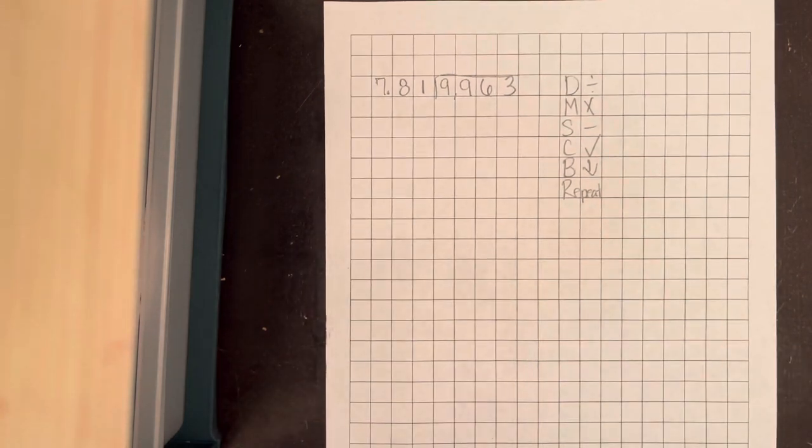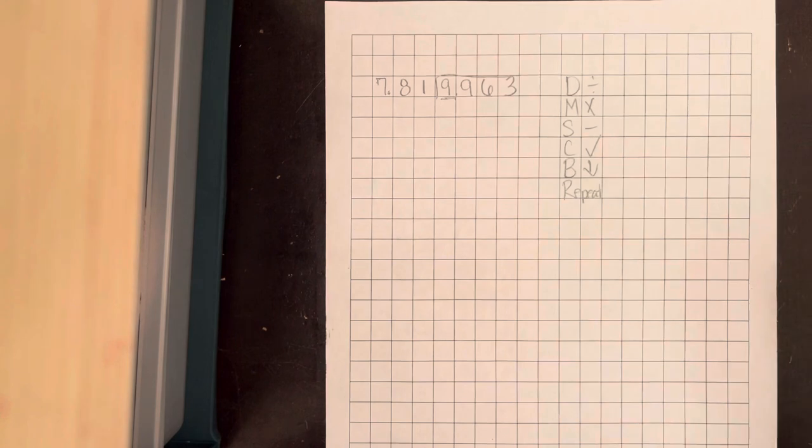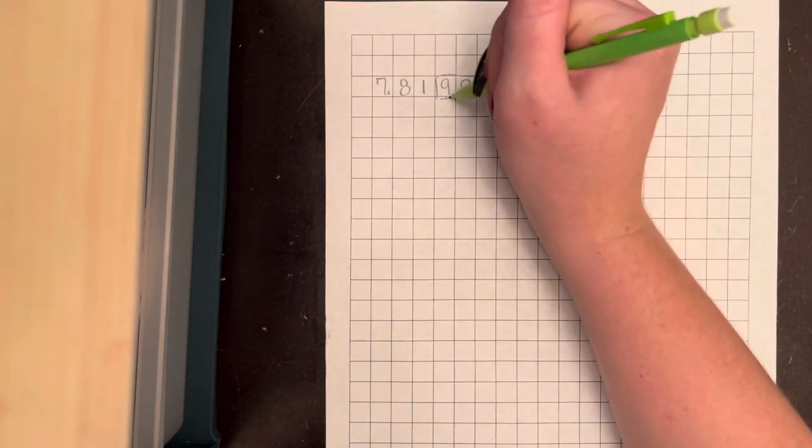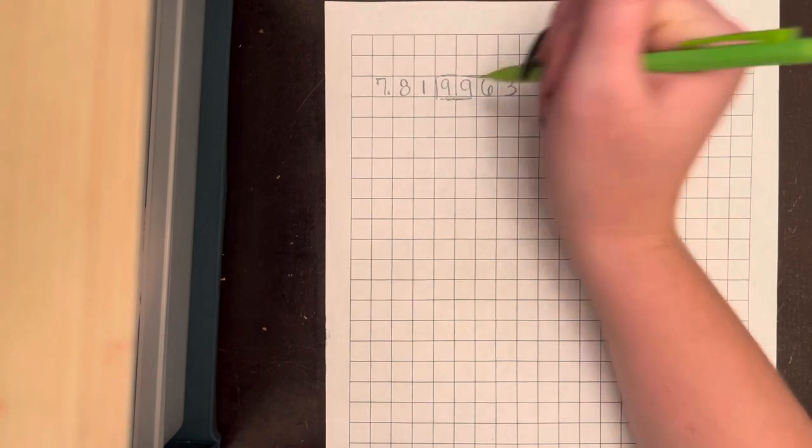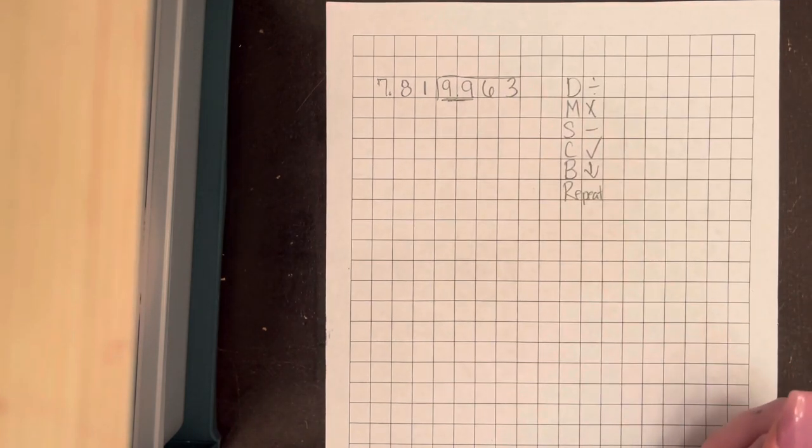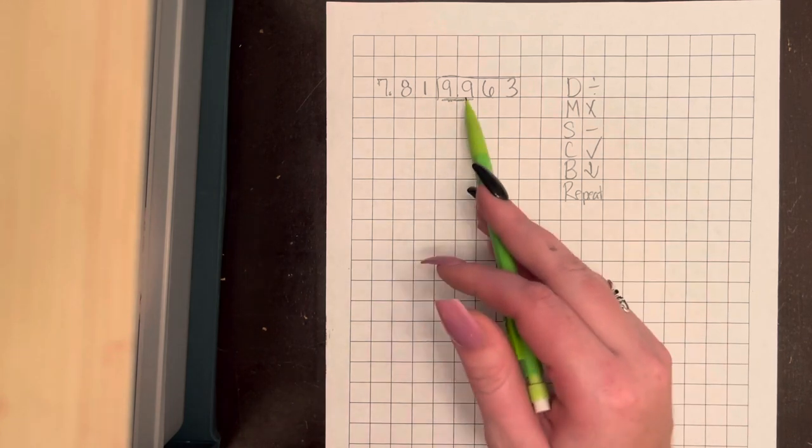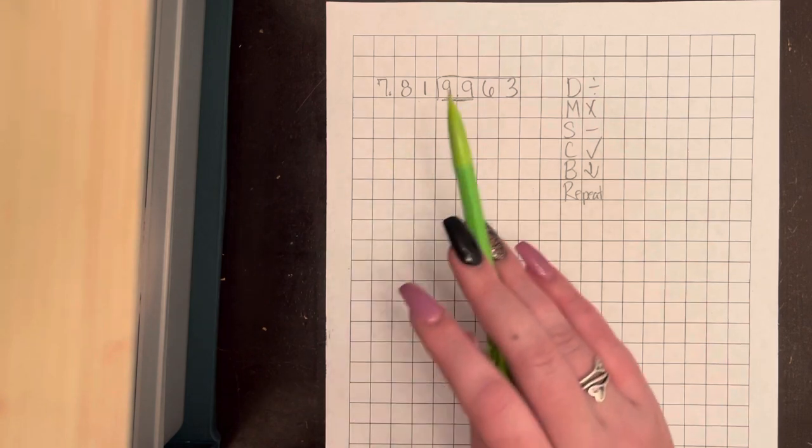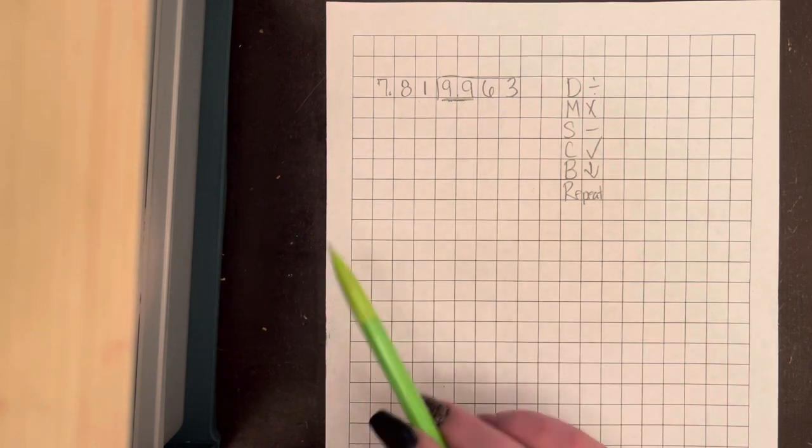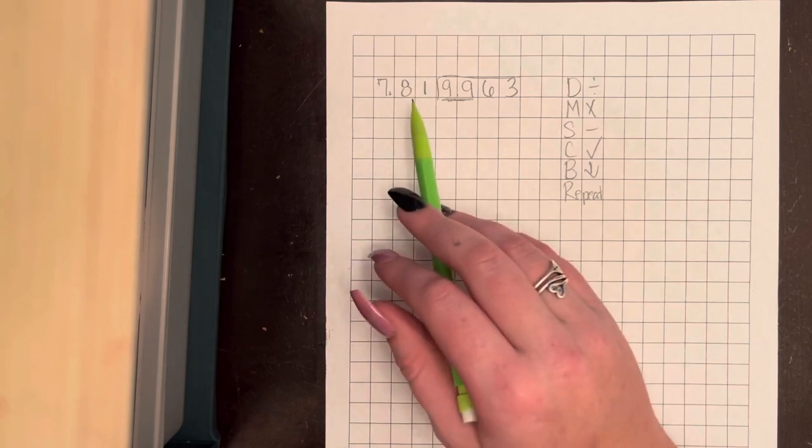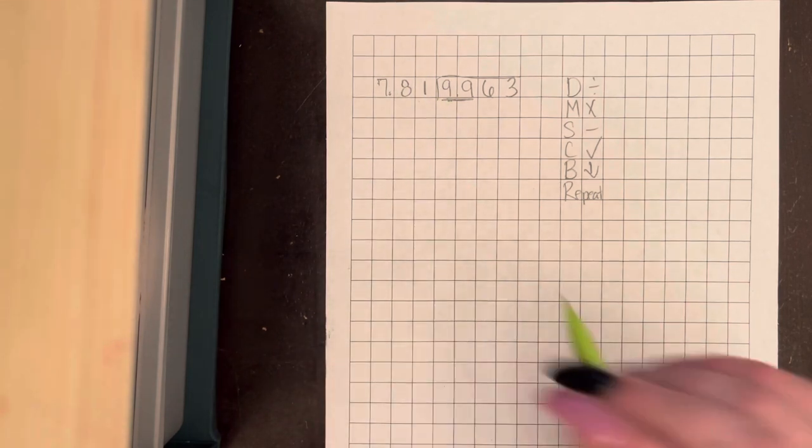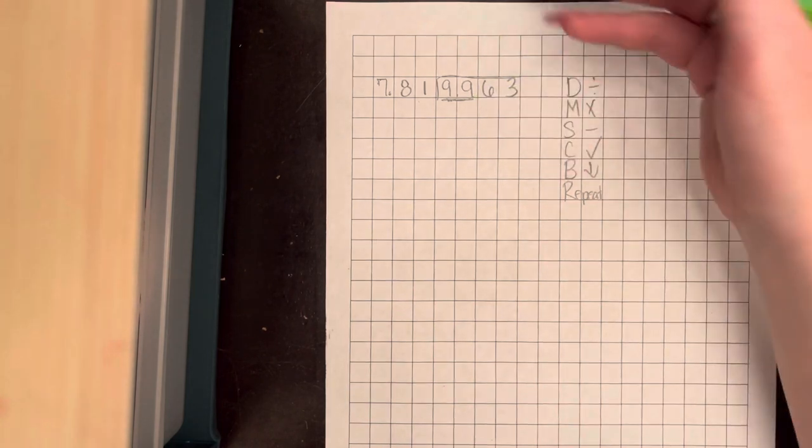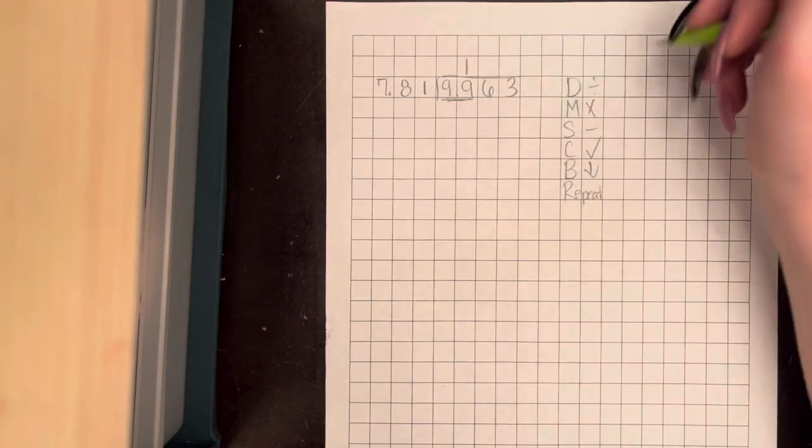Okay, so first we're looking at, can 81 go into 9? No, because 81 is bigger than 9. So we have to go all the way to 99. Now we're trying to see how many times 81 can go into 99. And we know that 81 and 99 are only going to be 18 apart. So that means that it can't go into there more than one time. So we're going to put the 1 on top of our last number, which is that 9, and that is our division.